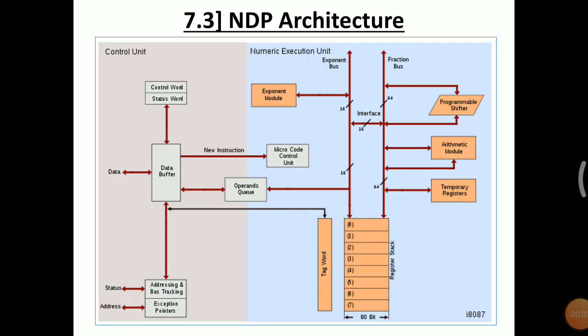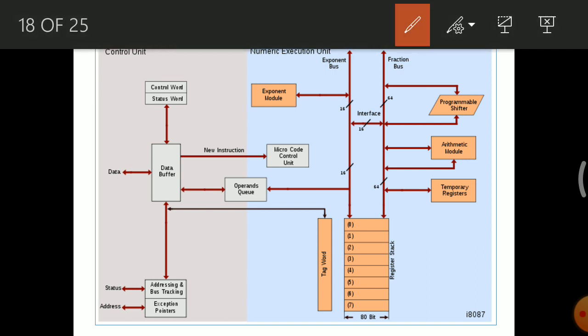Welcome to the next bit from the 7th chapter, NDB Architecture. Here you are going to study the Numeric Data Processor 8087 architecture in detail. As you can see in the block diagram, the numeric data processor architecture can be divided into two main parts: the control unit and the numeric execution unit.